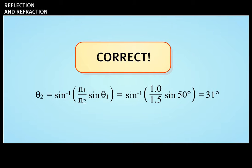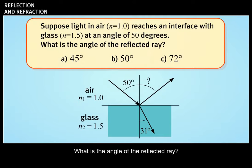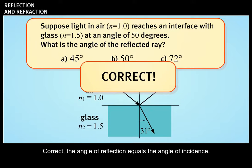Correct. We do this problem by solving Snell's law for angle 2 and inserting the numbers. What is the angle of the reflected ray? Correct. The angle of reflection equals the angle of incidence.